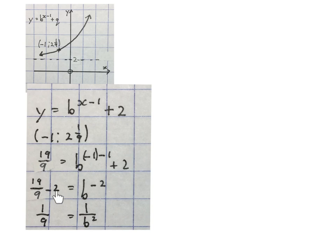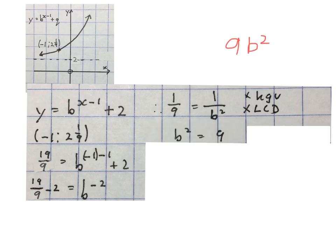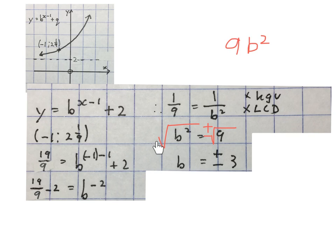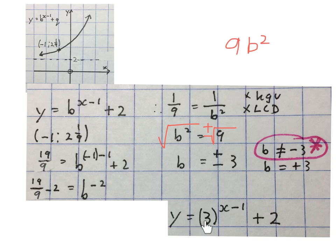We have the coordinate (−1, 2⅑). We take that and substitute it into our formula — 2⅑ in place of y, −1 in place of x — and simplify for b. We subtract 2 from both sides to remove it. Then we make this a positive exponent: 1/b². Using a calculator, we get 1/9. If 1/9 = 1/b², we multiply both sides by the LCD, which is 9b². This gives b² = 9. Square rooting both sides gives ±3, but in exponentials we never use a negative base, so b = 3. Substituting back gives the final answer: y = 3^x minus 1 + 2.